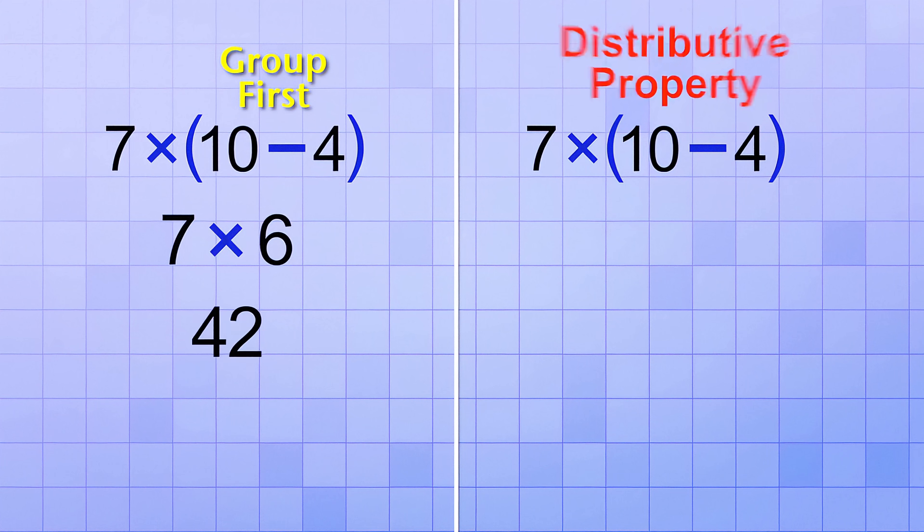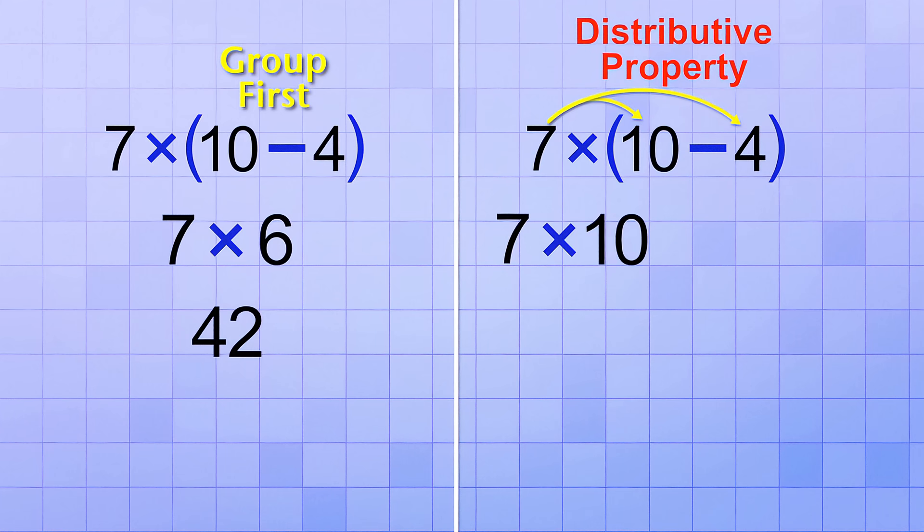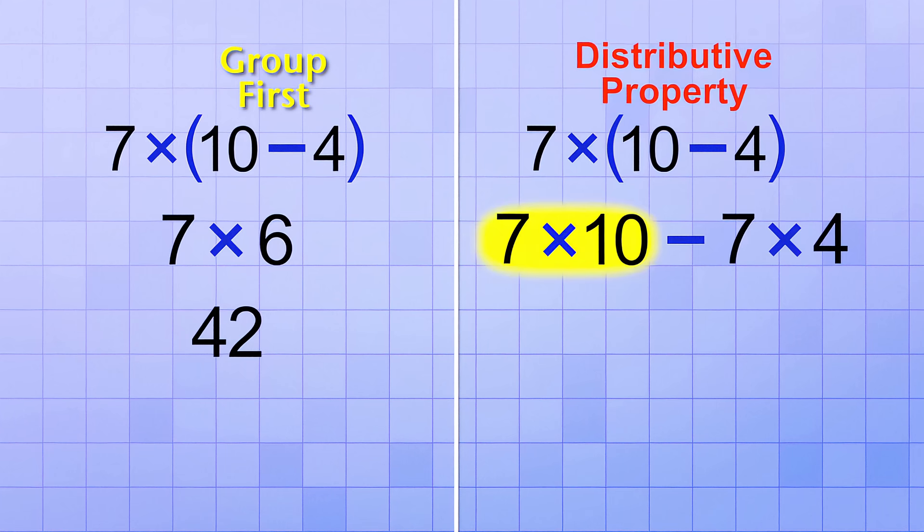Or you could use the Distributive Property. You distribute the 7 times to both members of the group to get 7 times 10 minus 7 times 4. 7 times 10 equals 70, and 7 times 4 is 28. And 70 minus 28 equals 42. Again, both ways are equivalent.